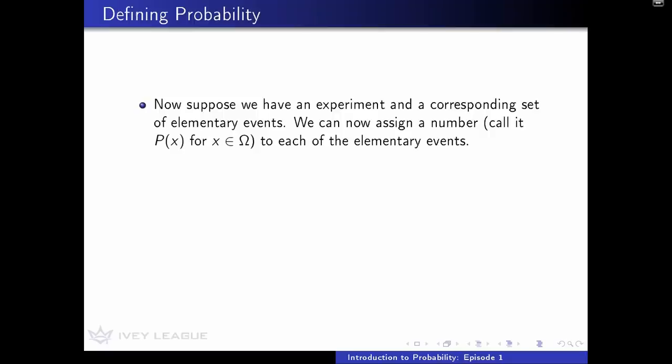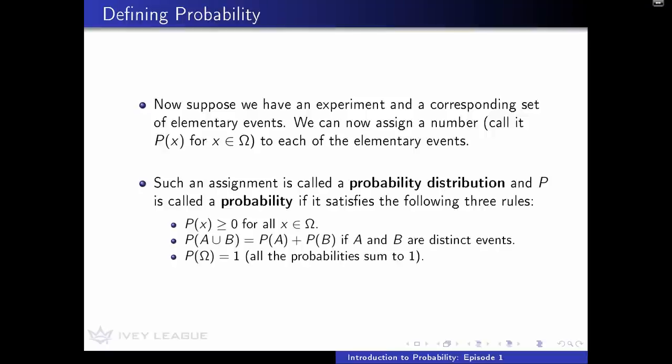We'll define probability in the following way. Suppose we have some experiment and we have the elementary events from that experiment. We can assign numbers to each of the elementary events. In some sense, we can assign any numbers to them, but what we'll see is that there are three rules that our assignment of numbers needs to follow in order for it to be a probability. We call the assignment a probability distribution and the numbers the probability if the following three things are true. The first one is that probabilities have to be positive. There are no negative probabilities because that's a fairly meaningless concept, so we restrict the probability of an event to be positive or zero.